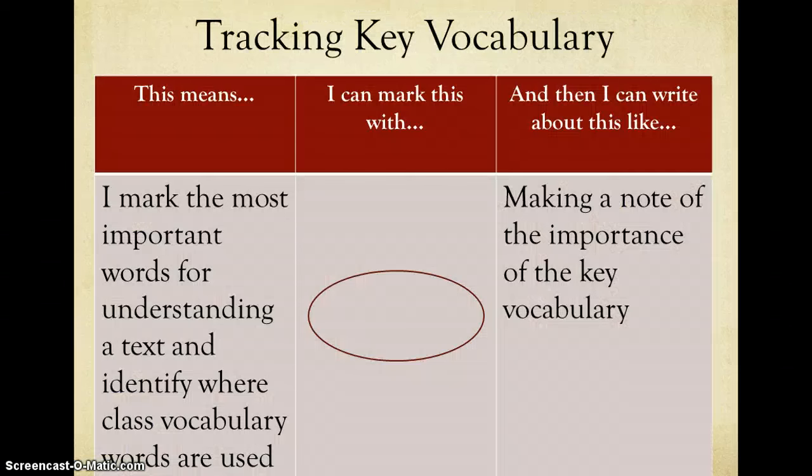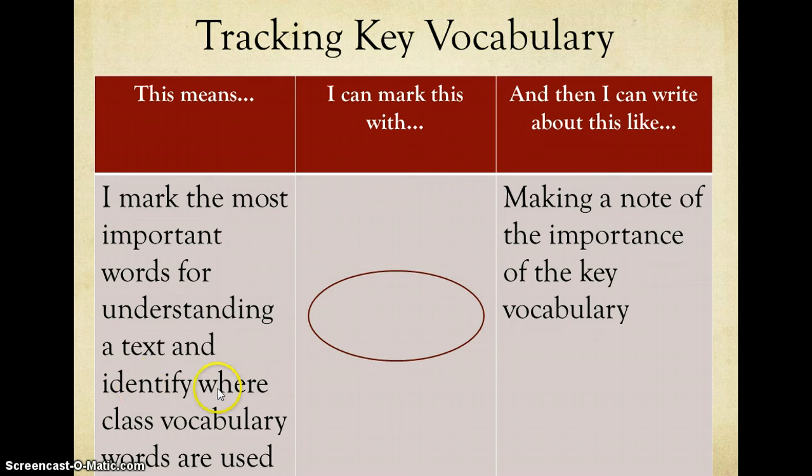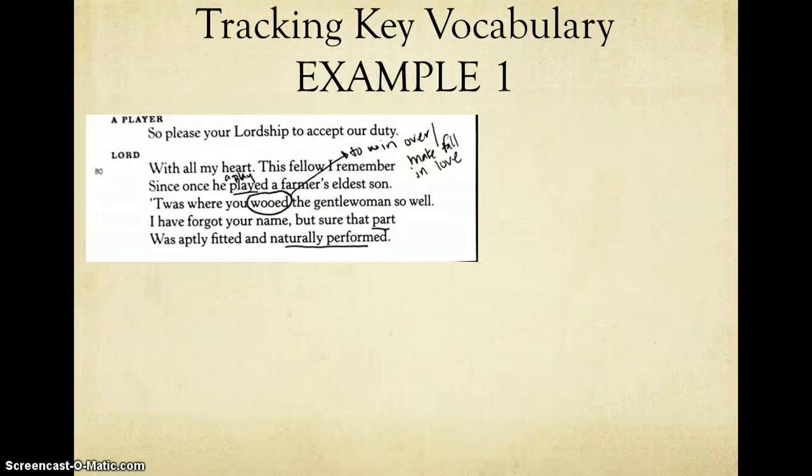Now the next reading strategy used in annotations, tracking key vocabulary, is a little bit more complex, because when you track key vocabulary, you're marking important words for understanding in the text, but you're also identifying where class vocabulary words are used. And this can look a little different, so I'm going to give you an example of each. You mark key vocabulary through the use of a circle, and then you make a note of what that key vocabulary is. You don't just want to identify the key vocabulary, you always need to have some thinking behind it. The first example is one where the vocabulary that I'm identifying comes up in the text.